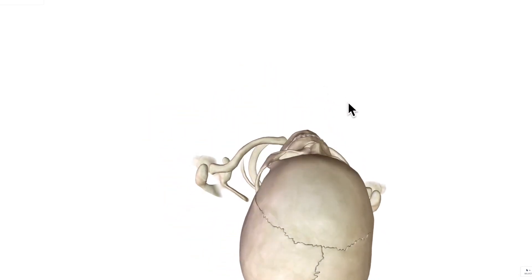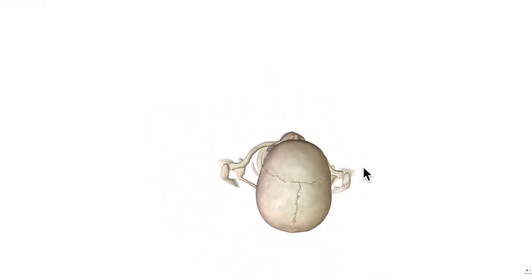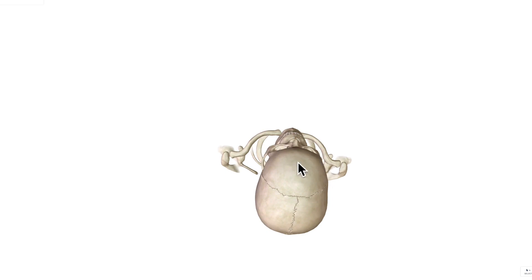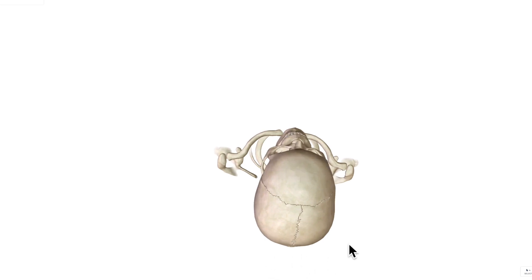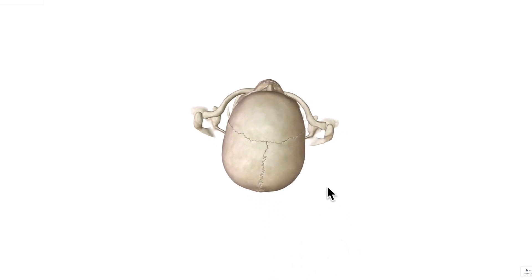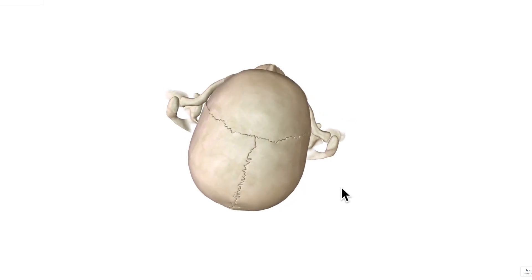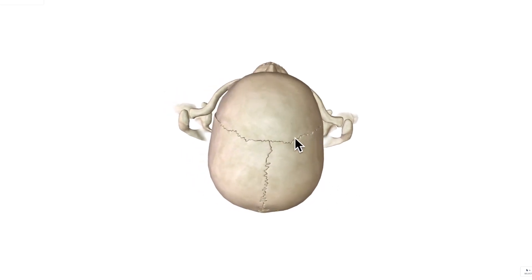If we look from the very superior aspect and we look downwards, so anterior here, posterior behind, if I move the skull slightly into the middle, we can see that this coronal suture is going to be joining a number of bones. Do you know the name of these bones?